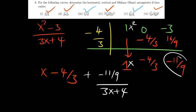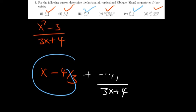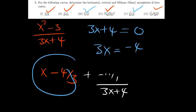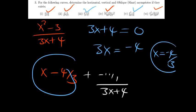So the slant asymptote is y equals x minus 4 over 3. For the vertical asymptote, equate the denominator to 0: 3x plus 4 equals 0, giving 3x equals negative 4, so x equals negative 4 over 3. That's your vertical asymptote. That's how you complete question 3 with positivity and confidence.